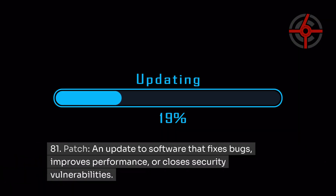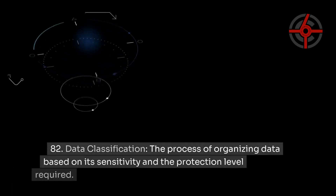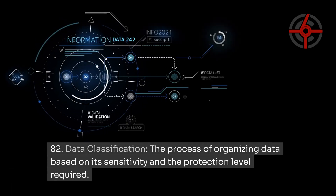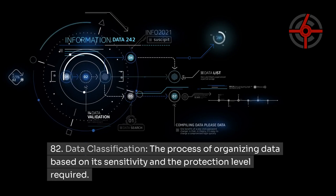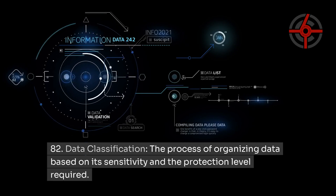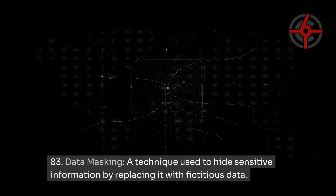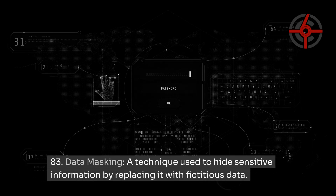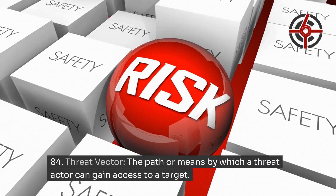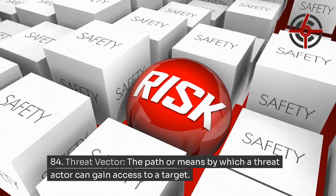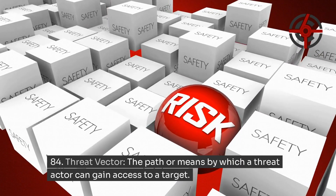Patch: an update to software that fixes bugs, improves performance or closes security vulnerabilities. Data Classification: the process of organizing data based on its sensitivity and the protection level required. Data Masking: a technique used to hide sensitive information by replacing it with fictitious data. Threat Vector: the path or means by which a threat actor can gain access to a target.